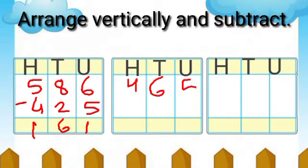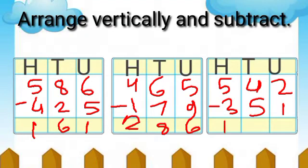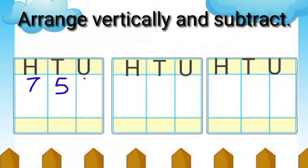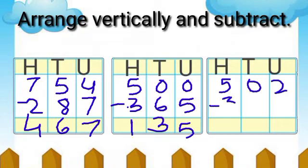Next: 465 minus 179 is equal to 286. Next example: 542 minus 351 is equal to 191. Next: 754 minus 287 is equal to 467.